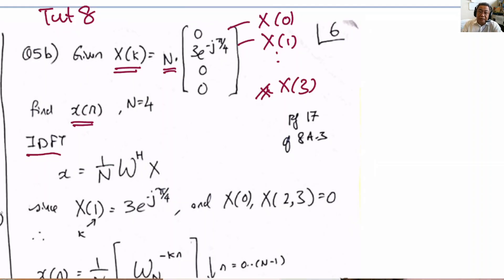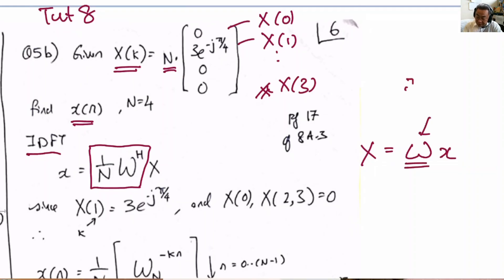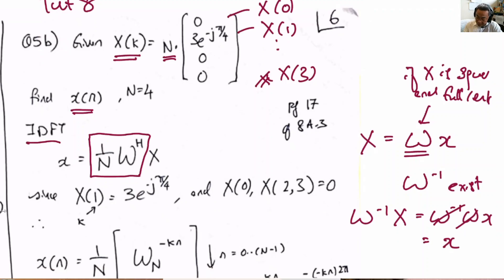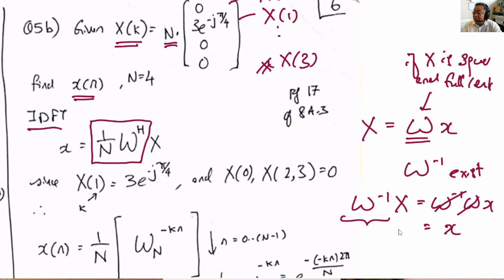You realize that if big X equals W multiplied by small x, and if W is square, which it is, and full rank, which it is, then W inverse exists. Therefore W inverse X equals W inverse W small x, and this becomes small x.